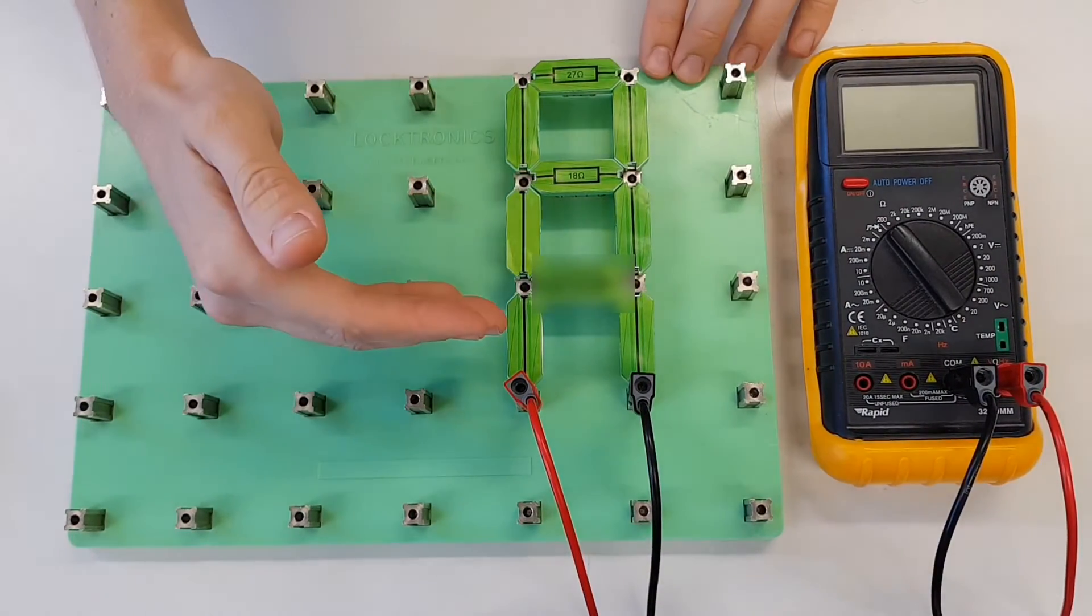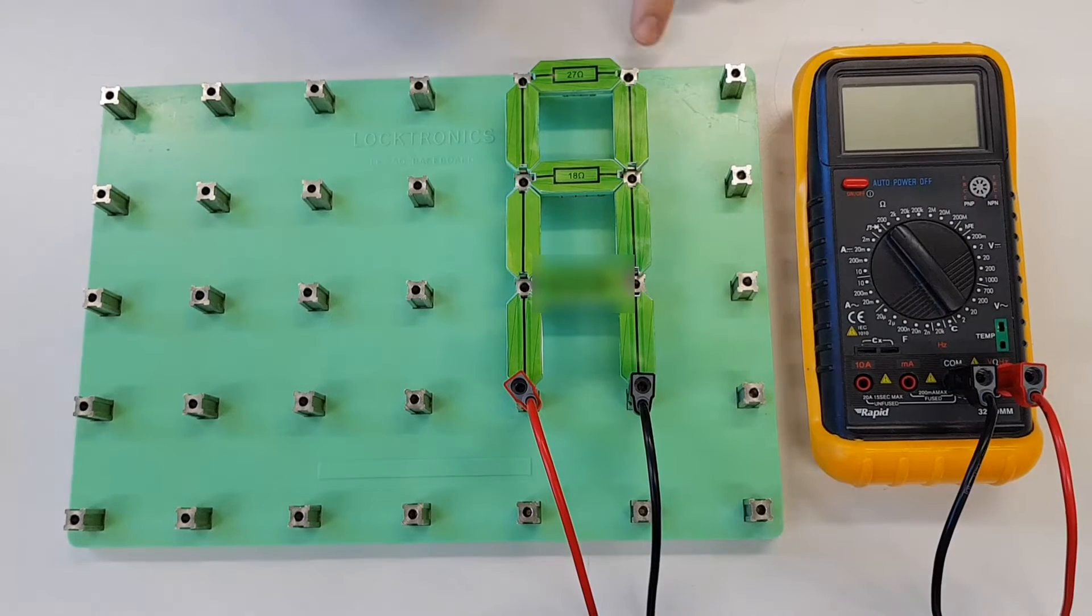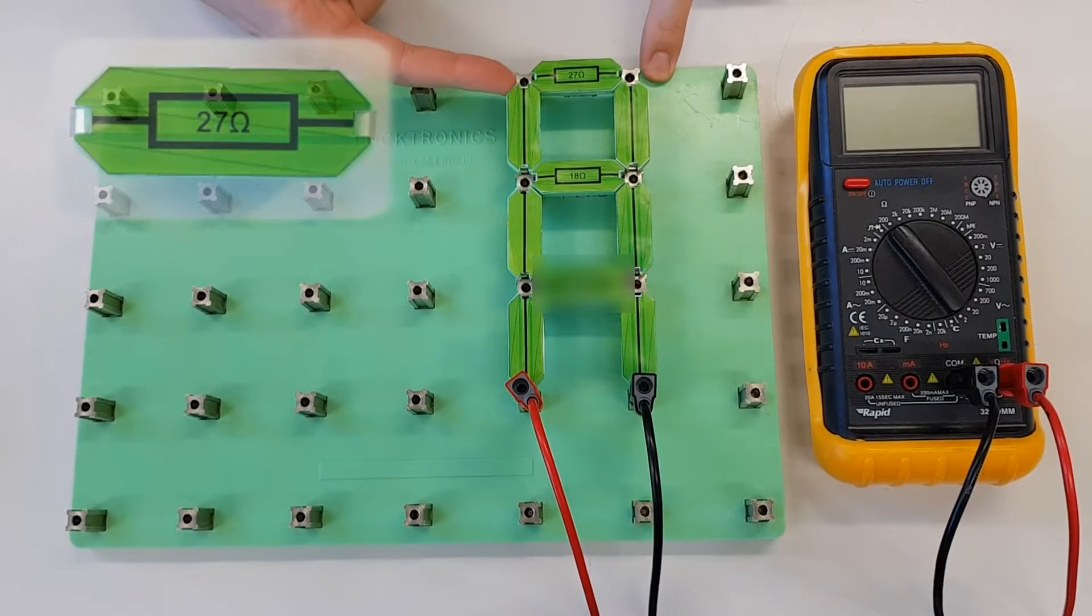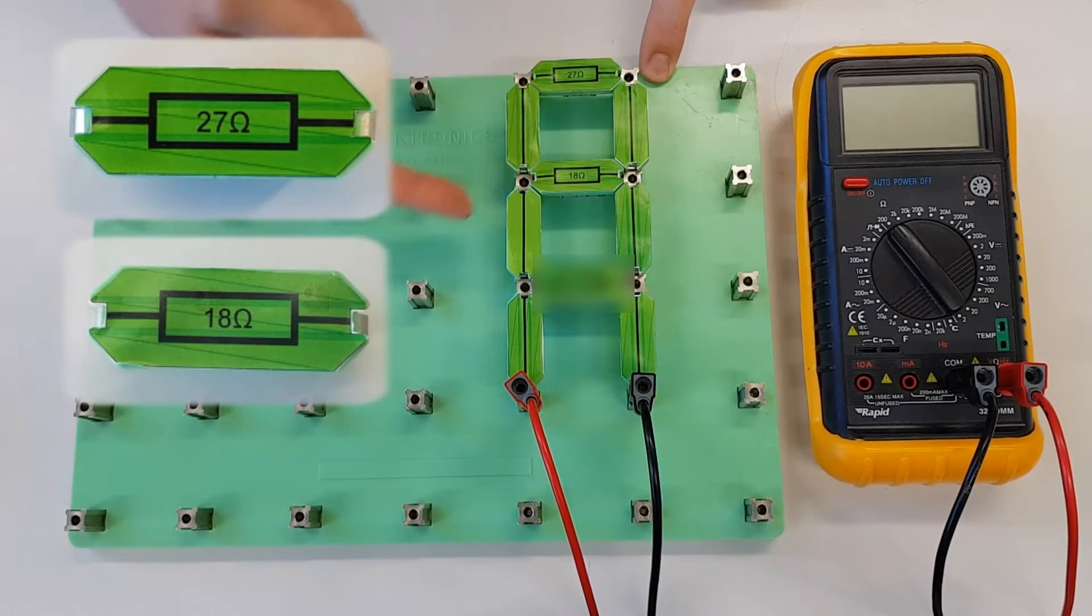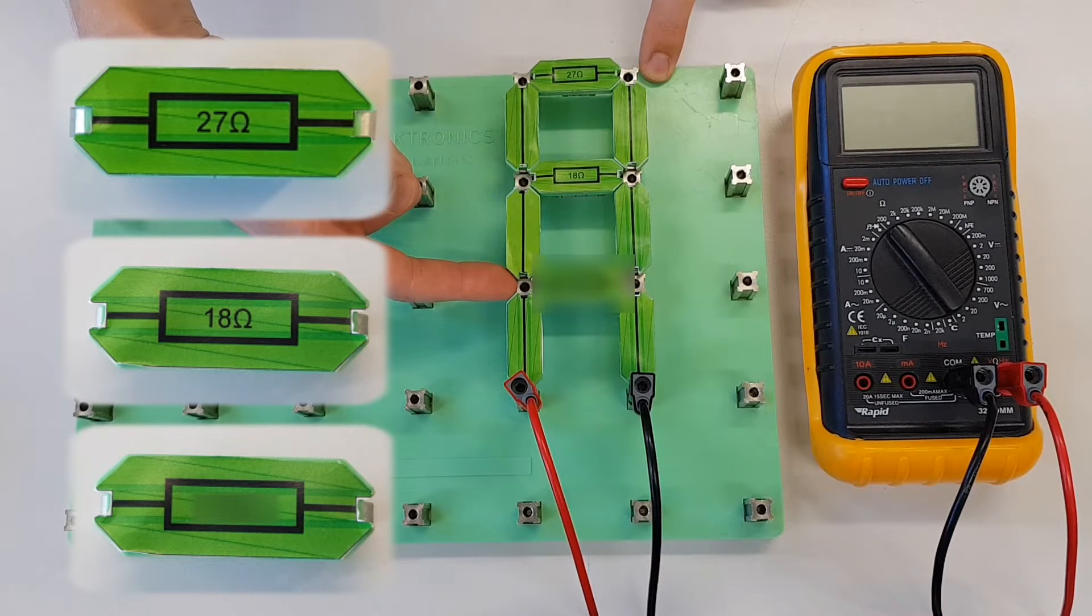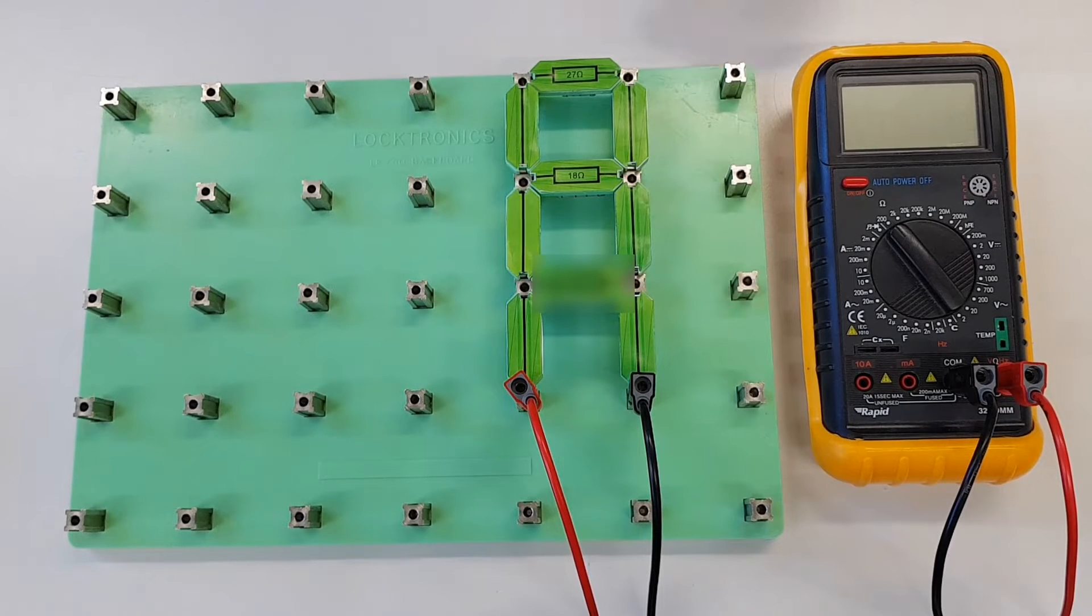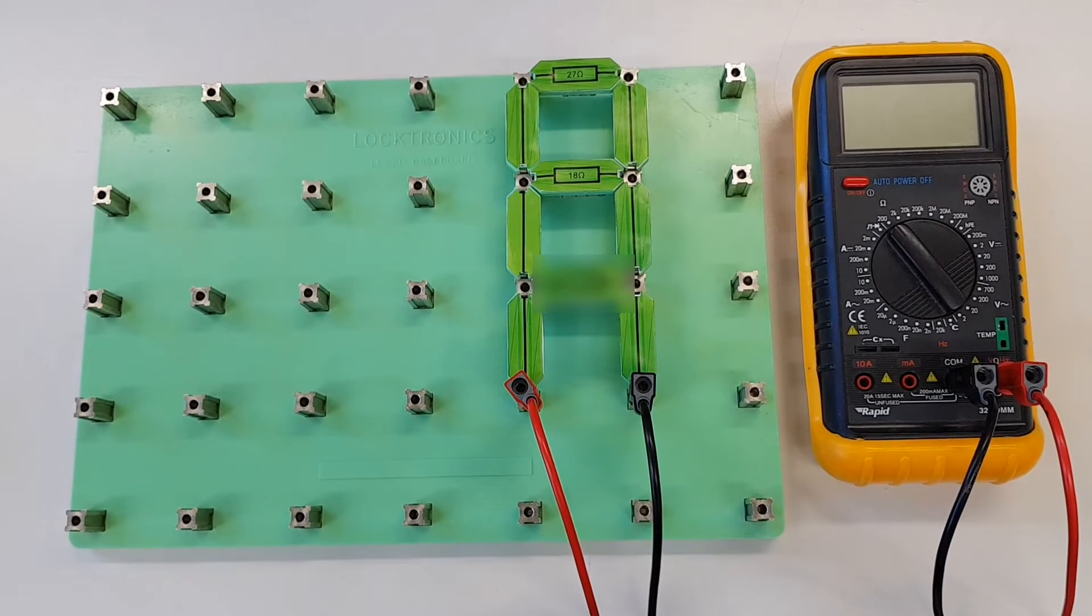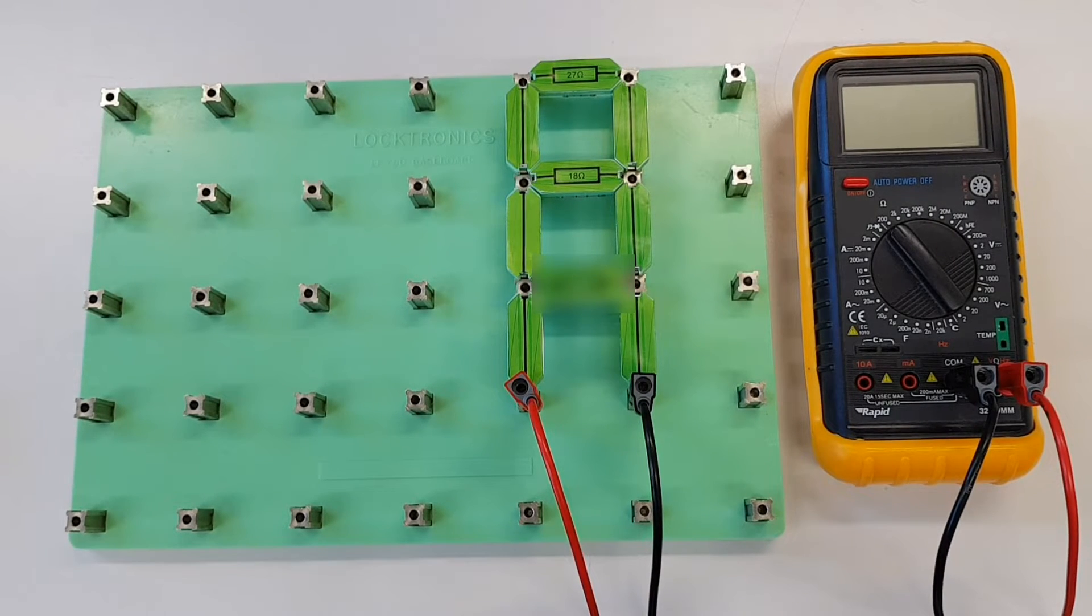So as you can see we've got our circuit set up here. We've got a 27 ohm resistor, an 18 ohm resistor and a mystery resistor, so we don't know what the value of this one is just yet. So what we're going to do is we're going to measure the resistance using our multimeter. We've got this set to ohms as you've seen in a previous video. So we'll turn the multimeter on and we'll see what the total resistance of the circuit is.